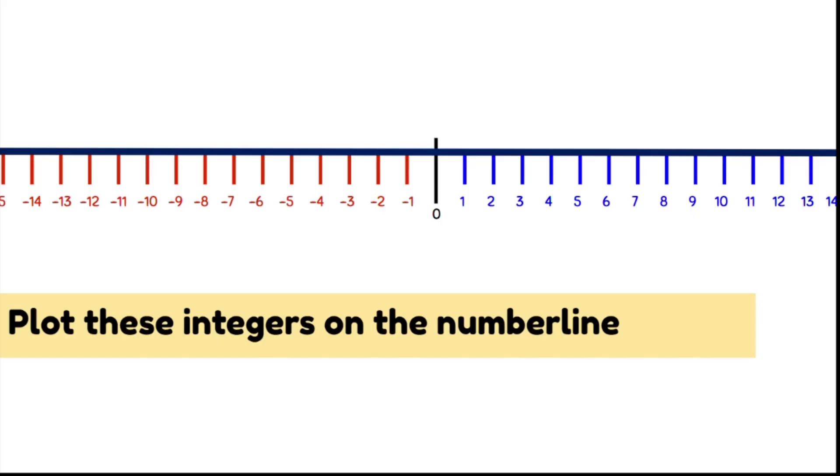Let's have a go at plotting some integers on the number line. Remembering our first step is to work out whether our numbers are positive or negative. If they've got a minus sign in front of them, they are negative numbers and they're found to the left. If they don't have any sign in front of them, they're positive and they're found to the right.